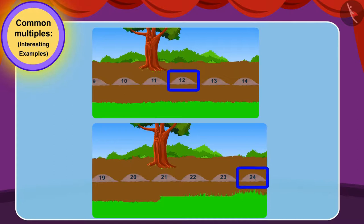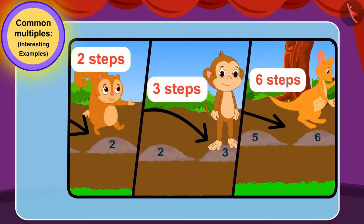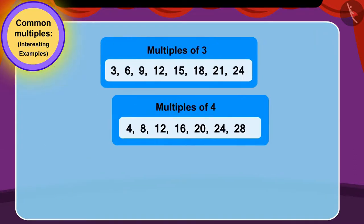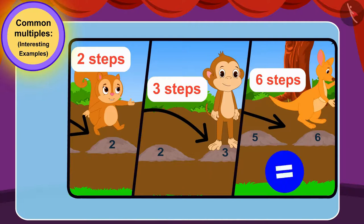Because there were only two stones on which the three friends had jumped, the three friends crossed the marsh successfully and reached the way out. Children, if all three friends had jumped to multiples of two, three, and six instead of multiples of three, four, and six, would the three friends have crossed the marsh successfully? You can stop the video and find the answer.